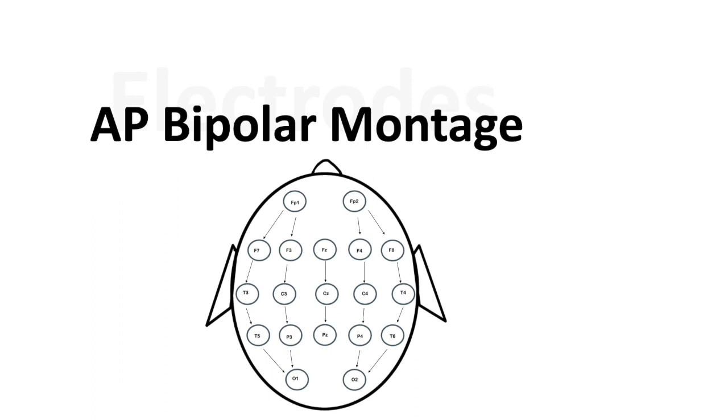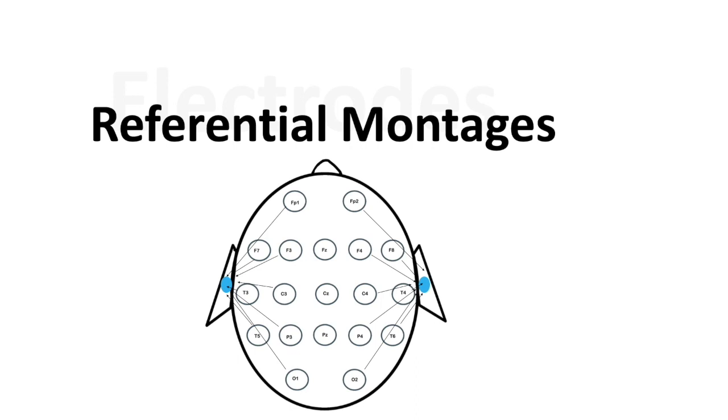The next most common montage utilized is a referential montage. In this system, every electrode is compared to a single point or maybe two different points. A lot of times, people compare one side to an ear electrode and then the other side to an ipsilateral ear electrode, or vice versa. You might compare the whole right side to the left ear electrode and the whole left side to the right ear electrode. This is really useful when you're trying to figure out where a waveform is maximal because the highest amplitude would be the area where it's maximal with a referential montage.